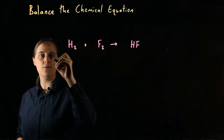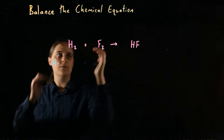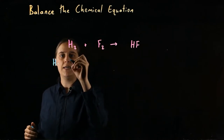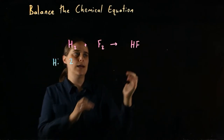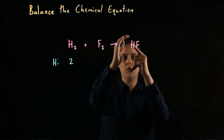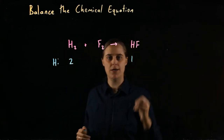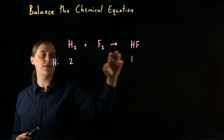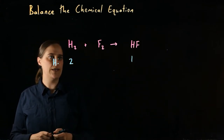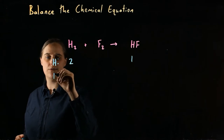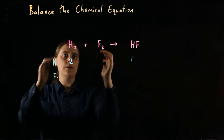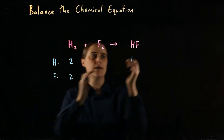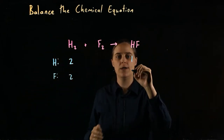Let's start with hydrogen. Before the reaction, before the arrow, we have two hydrogen atoms. After the reaction, we only have one. Hydrogen is not balanced. A balanced equation would have the same number before and after. Let's also count our fluorines. Before the reaction, we have two fluorine atoms. Afterwards, we only have one.